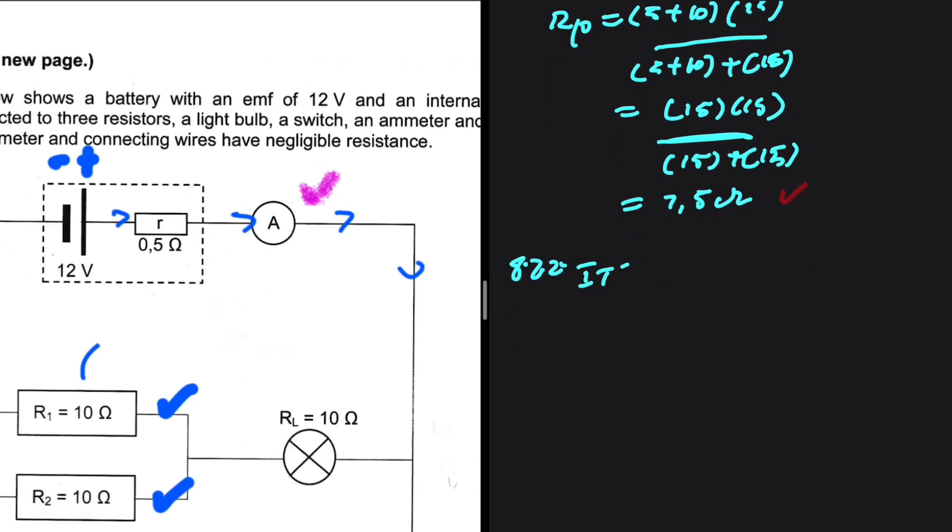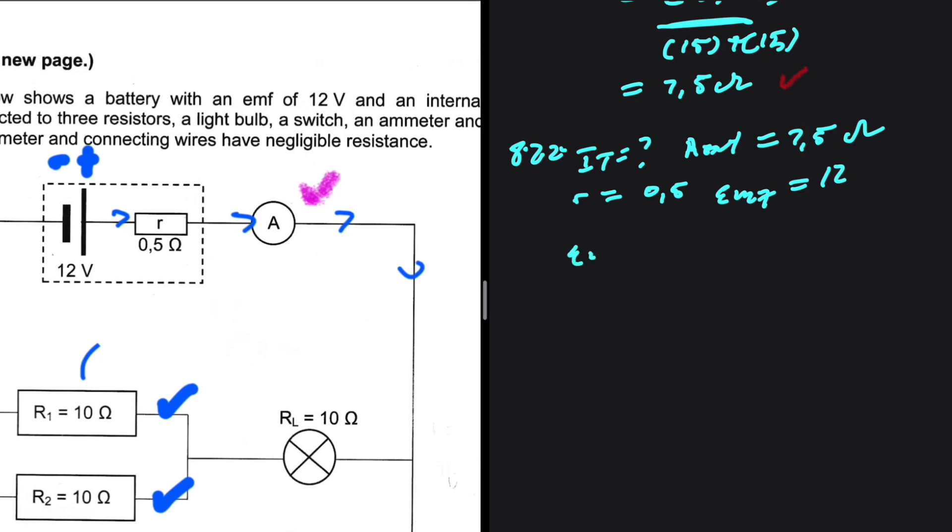So I total is what we're interested in. We have R external, which equals 7.5 ohms. We have R internal, which is 0.5. We have EMF, which equals 12. It will be obvious the equation we need to use. EMF equals I total multiplied by R external plus R internal.